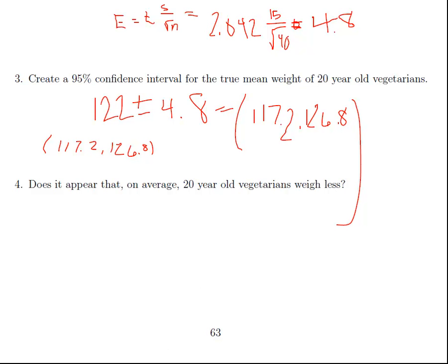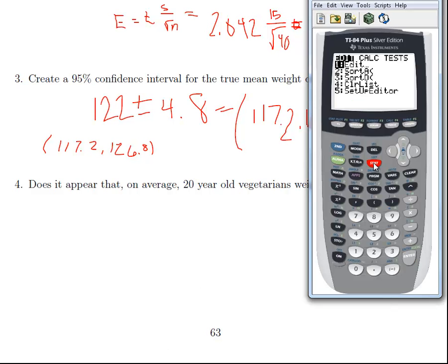Let me just show you real quick on the calculator. I go to stat, then test, then I go down to 8. I do the sample mean of 122, the standard deviation of 15, and then our sample size which is 40. We still want a 95%, and I just hit calculate. There it is: 117.2 and 126.8.